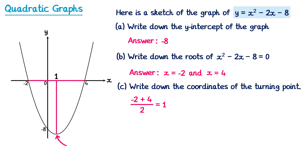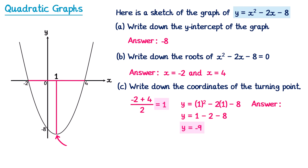We also need the y-coordinate, which isn't obvious — the graph crosses the y-axis at negative 8 and the turning point is lower, but we can't just guess. We use the equation of the graph. We know x equals 1, so we substitute x equals 1: y equals 1 squared minus 2 lots of 1 minus 8. That's 1 subtract 2 subtract 8 which is negative 9. So the y-coordinate is negative 9, and the coordinates of the turning point are 1, negative 9.